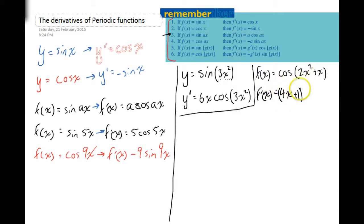And then that multiplied by, the derivative of cos is negative sine. Now this is going to be a bit strange. Be careful here. 4x plus 1 times negative sine, and then whatever was in those brackets, 2x squared plus x.